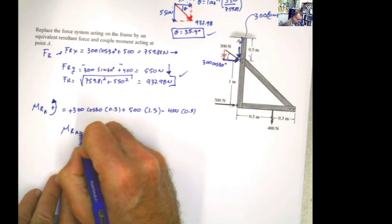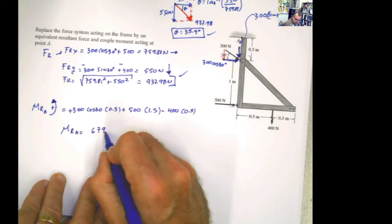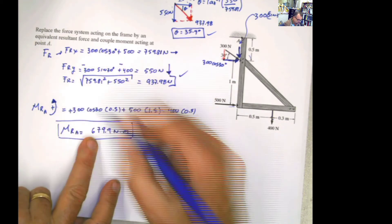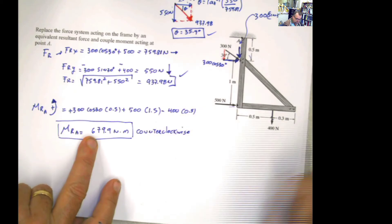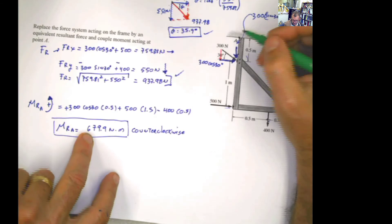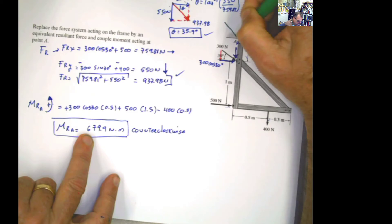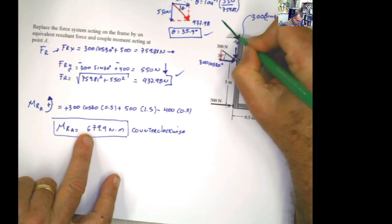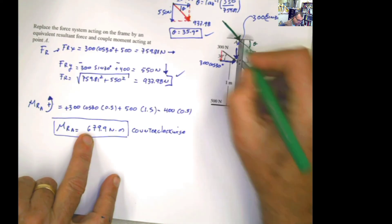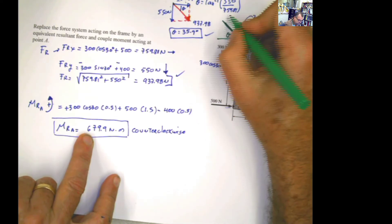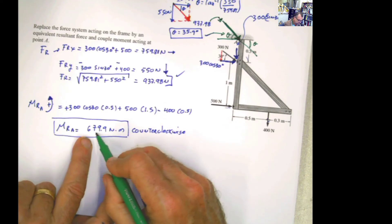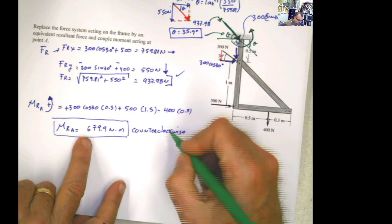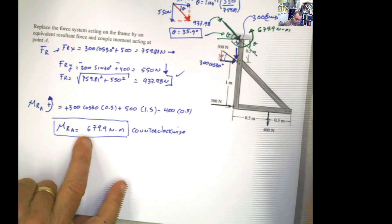So the resultant moment at A is 679.9 Newton meter. Because I got a positive result and positive was defined as counterclockwise, the moment is counterclockwise. The final answer: all of those forces can be substituted by one force acting at A with a magnitude of 937.98 Newton at the calculated angle of 35.9 degrees, plus a counterclockwise moment of 679.9 Newton meter at A.